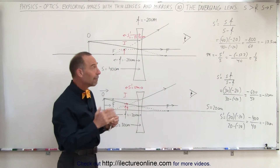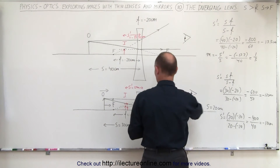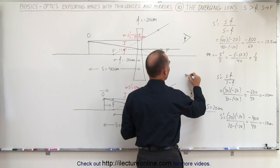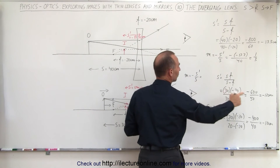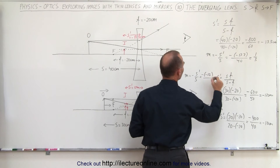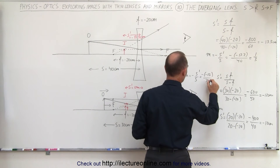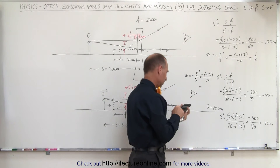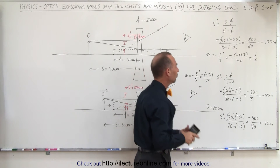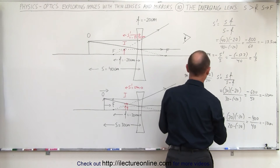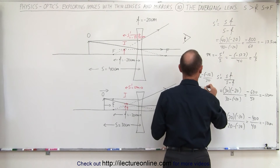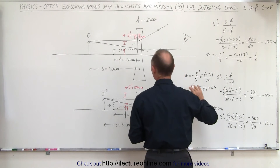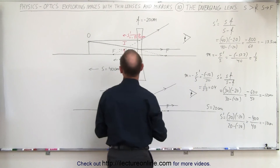Let's calculate the magnification for each case. With the object at 30 centimeters, M = −S'/S = −(−12)/30 = 12/30 = 0.4. So the image is 1/2.5 the size of the object. That's interesting — the image actually becomes a little bit larger compared to when the object was farther away. As the object gets closer and closer to the lens, the image actually becomes larger and larger.